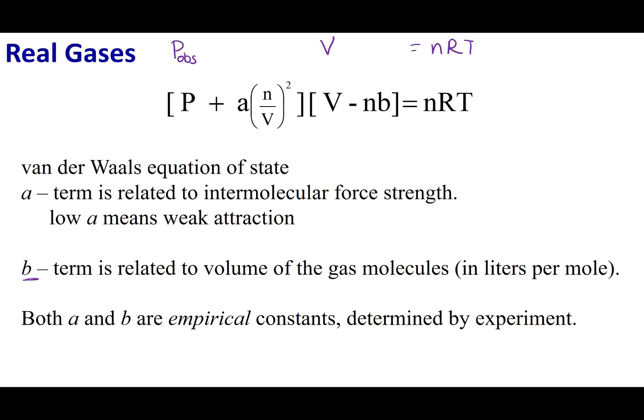But a real gas is going to take up space. It is matter. So to correct for that, I'm going to take the number of gas particles I have, or the moles of gas particles, and times it by this correction factor B, which is related to the size or the space that molecule takes up. So that's going to be my volume correction.